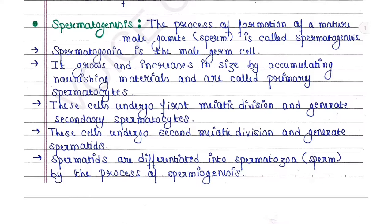Now we will see spermatogenesis. The process of formation of a mature male gamete, that is sperm, is called spermatogenesis. In this case, spermatogonia is the male germ cell. It grows and increases in size by accumulating nourishing materials and are called primary spermatocytes. These cells undergo first meiotic division and generate secondary spermatocytes.